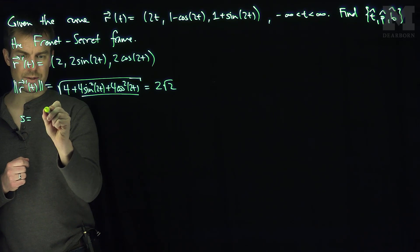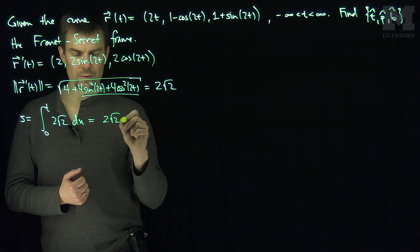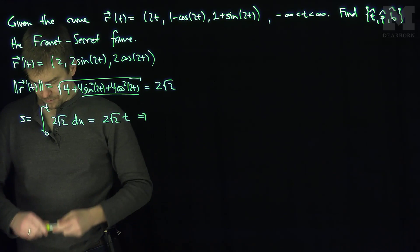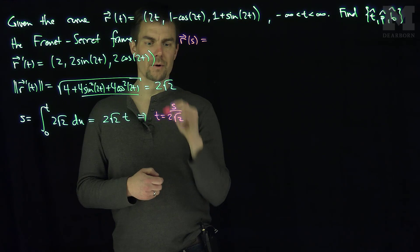So our arc-length parameter s is going to be the integral from 0 to t of 2√2 du. So our arc-length parameter s is going to be 2√2 · t, or equivalently t = s / (2√2). We're going to update our curve now and put it into arc-length parameter.